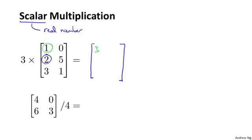2 times 3 is 6. 3 times 3 is 9. 0 times 3 is 0. 3 times 5 is 15. And 3 times 1 is 3. And so this matrix is the result of multiplying that matrix on the left by 3.